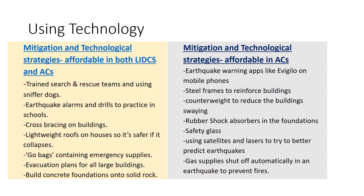Some mitigation strategies are only really affordable in advanced countries such as Japan. In countries like these, people make use of mobile phones with apps like the e-vigilo app, which gives a warning directly to their phone if an earthquake is about to happen. Buildings can also have clever design features such as a counterweight to counteract the swaying of the building, and the foundations can have a shock-absorbing system to absorb the force of the shaking.